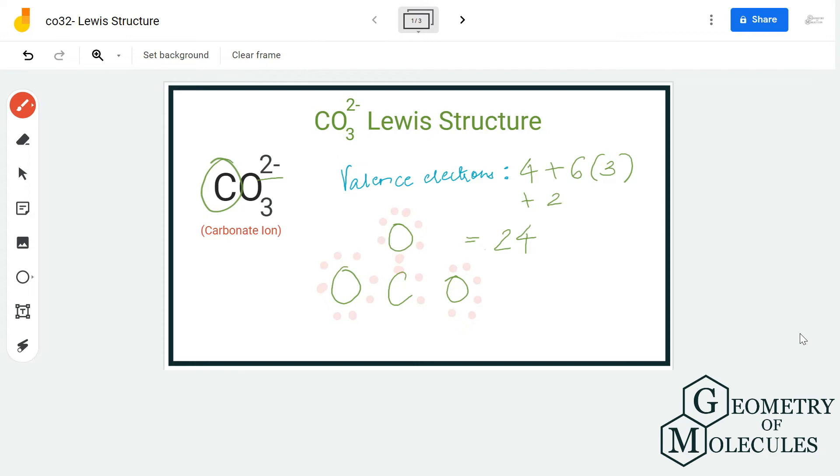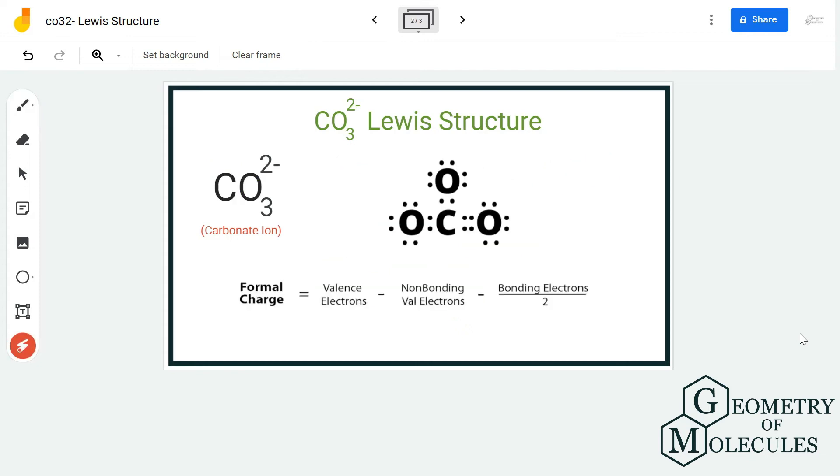Now to confirm if this is the valid Lewis structure for this ion and it is relevant, we are going to look at the formal charges. So here you can see the carbon has a net charge of zero, which is good because it is the less electronegative atom so it should have charges near to zero.